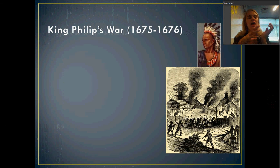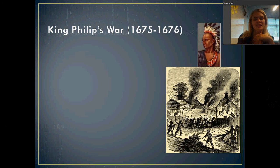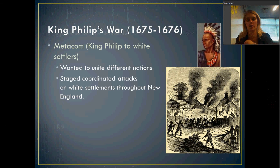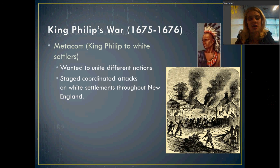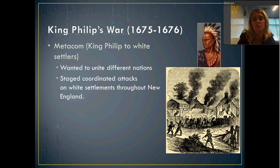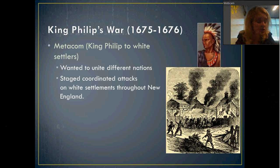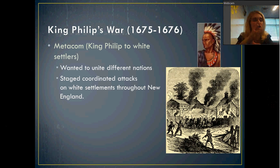This sketch shows the Pequot village surrounded by people firing on it — both Native American allies and white settlers. That's the first of these conflicts. The second is King Philip's War, which takes place from 1675 to 1676. There's a man named Metacom — the white people didn't like that name and started calling him King Philip. Metacom is the leader of several different Indian nations that he wants to unite to fight back against the whites in the colonies. He unites several different tribes, some of whom had been enemies, and they start attacking settlements all throughout New England, coordinating attacks to burn multiple villages simultaneously.